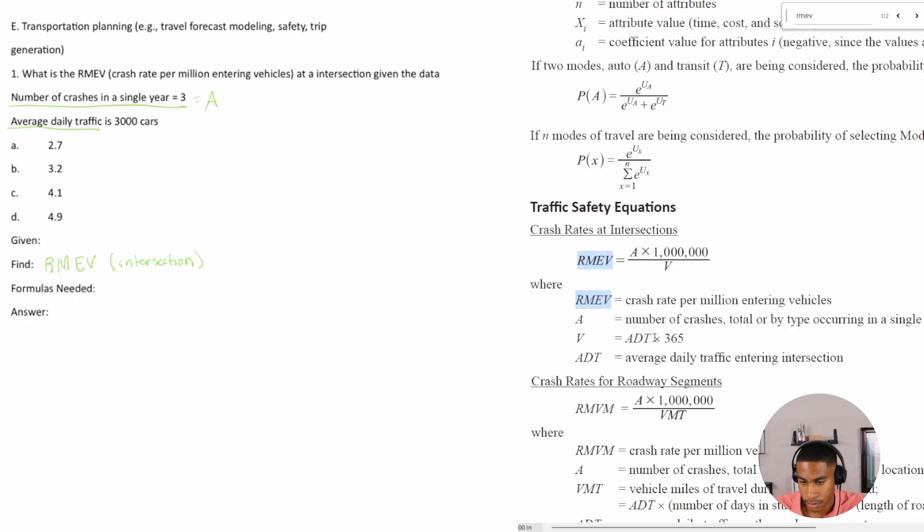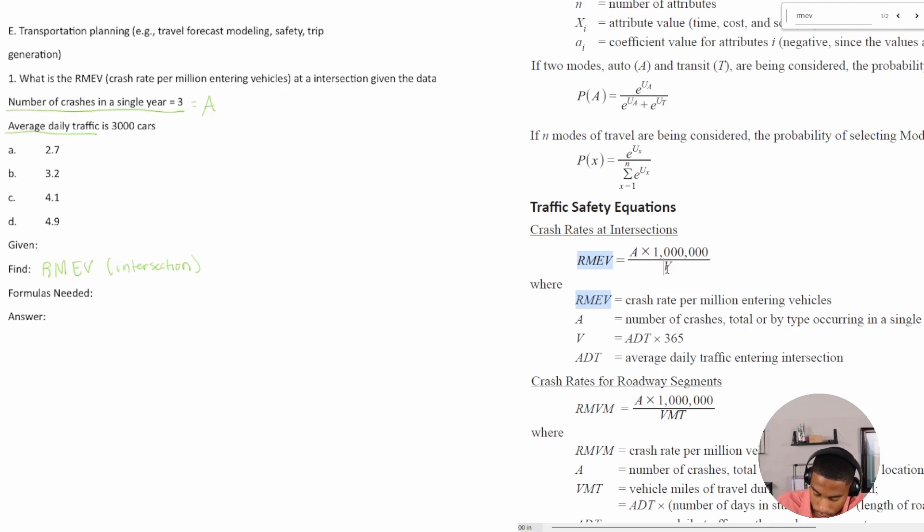All right, so what is V? V is equal to ADT times 365.